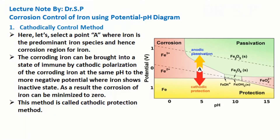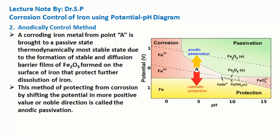This point A is in the corrosion region for iron. The corroding iron can be brought into a state of immunity by cathodic polarization of the corroding iron at the same pH, to a more negative potential where iron shows an inactive state. As a result, the corrosion of iron can be minimized to zero. This method is called the cathodic protection method.